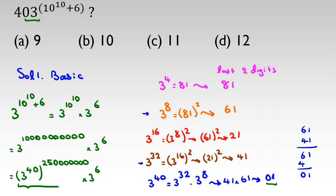Now we know 3 to the 40 is 1, so only 3 to the 6 is important. 3 to the 6 is 729. So the last two digits will be 29, and sum is 2 plus 9 equal to 11. So the answer is C.